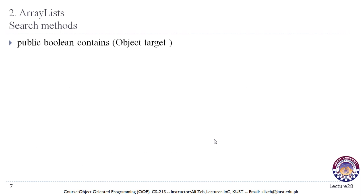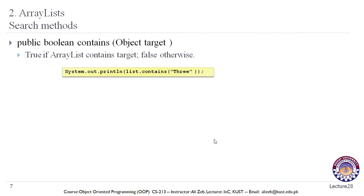The contains method returns true if the ArrayList contains the target, false otherwise. For example, System.out.println(list.contains(3)) — if our list contains three, this method returns true; otherwise it returns false. In this case it will return true.